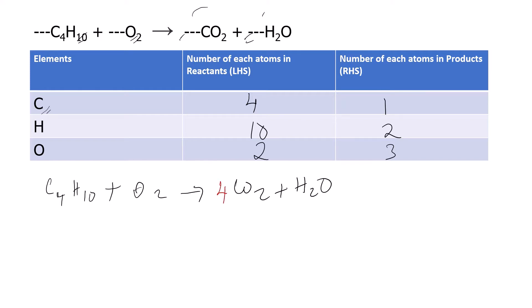Starting with carbon, I put a coefficient of 4 in front of CO₂ so the carbon count becomes four. For hydrogen, we have ten but only two in H₂O, so I multiply by 5 to get five times two equals ten, balancing hydrogen. Now checking oxygen: on the product side, four times two gives eight, plus five equals thirteen oxygen atoms.